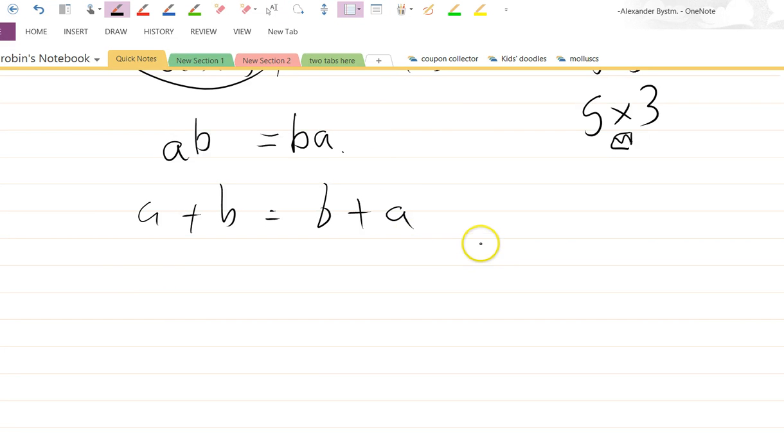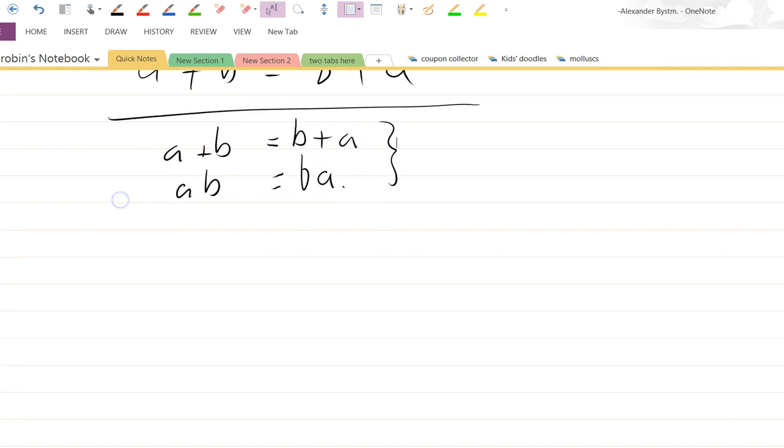OK, so we've looked at addition and multiplication, and we've established that A plus B equals B plus A. And AB, the shorthand symbol for multiplication, equals BA for any two numbers A and B, whether they're positive or negative or whatever. It doesn't matter.